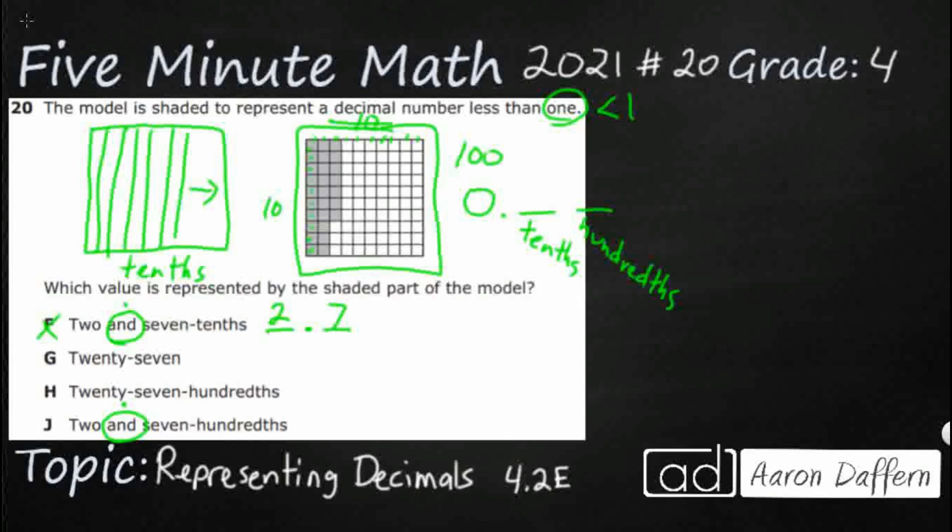So this is just plain old 27, not 27 tenths, not 27 hundredths, just 27. If I was going to put a place value, remember your decimal, if you don't really need one, always goes after the ones place. So this is 27 with the two in the tens and the seven in the ones. So that is not what we need.